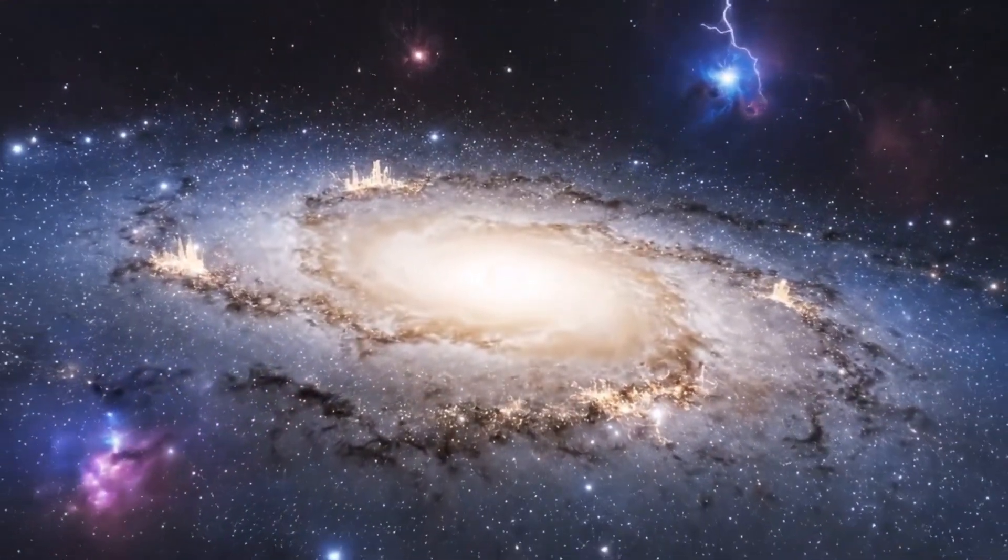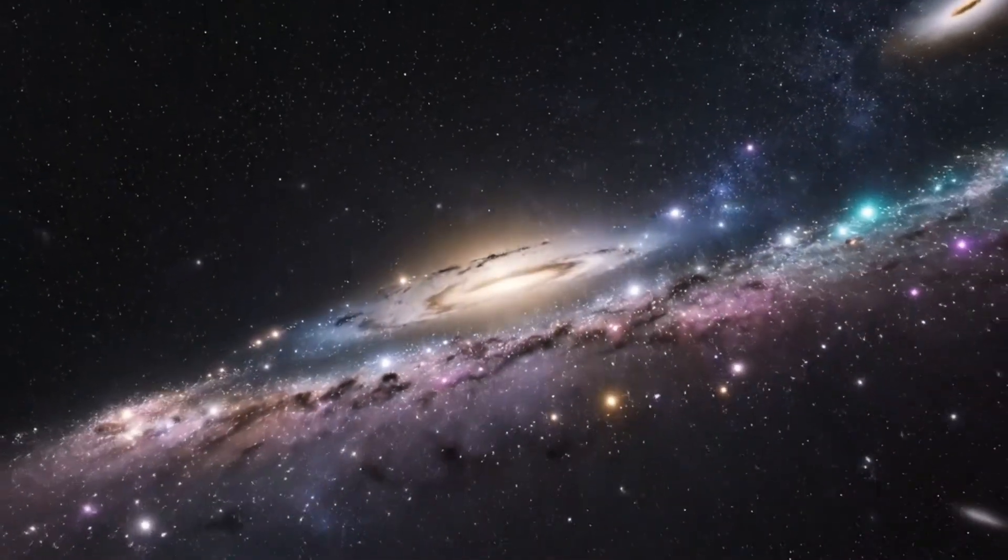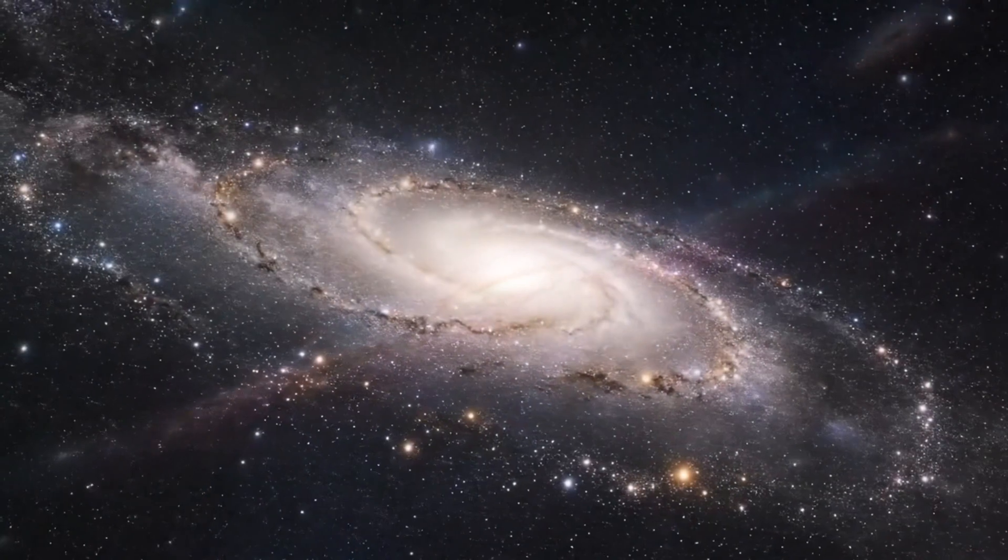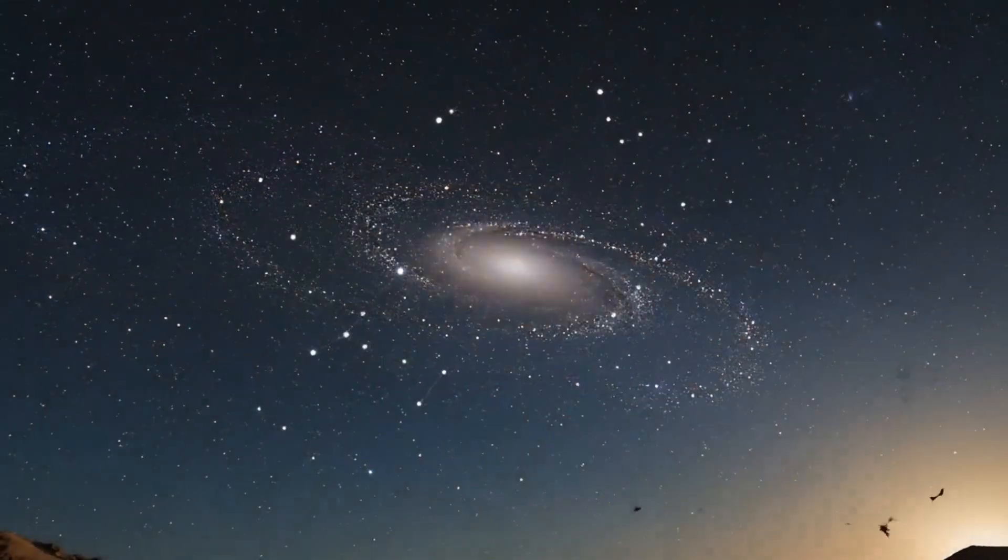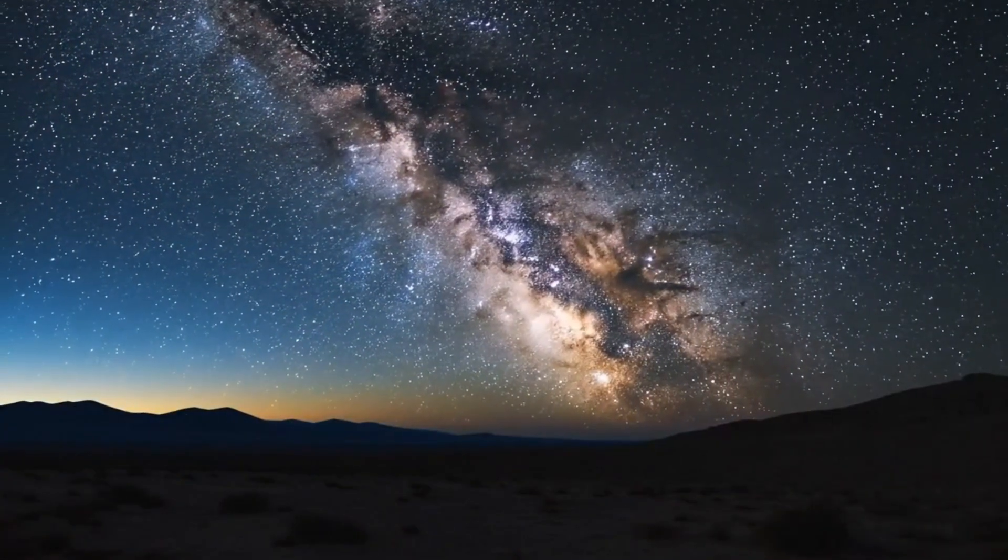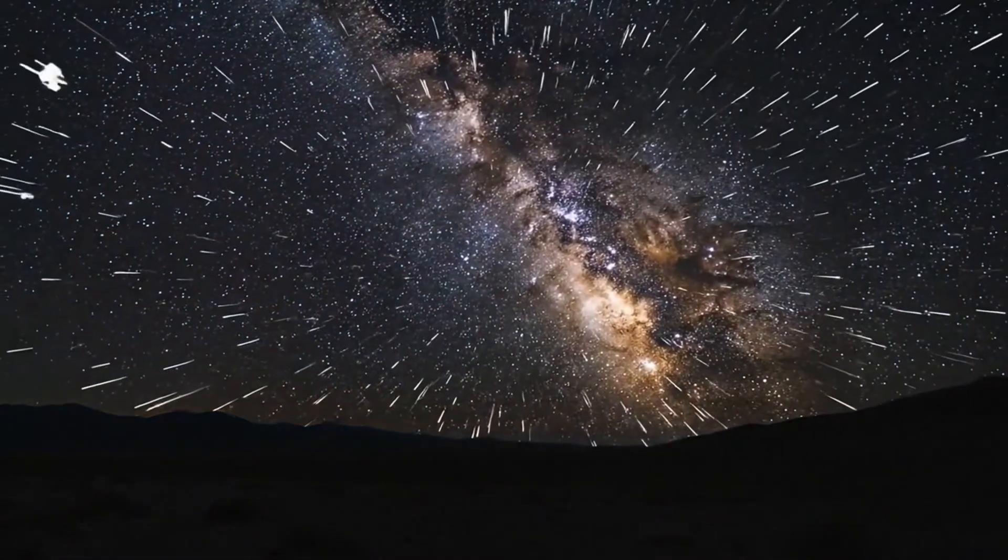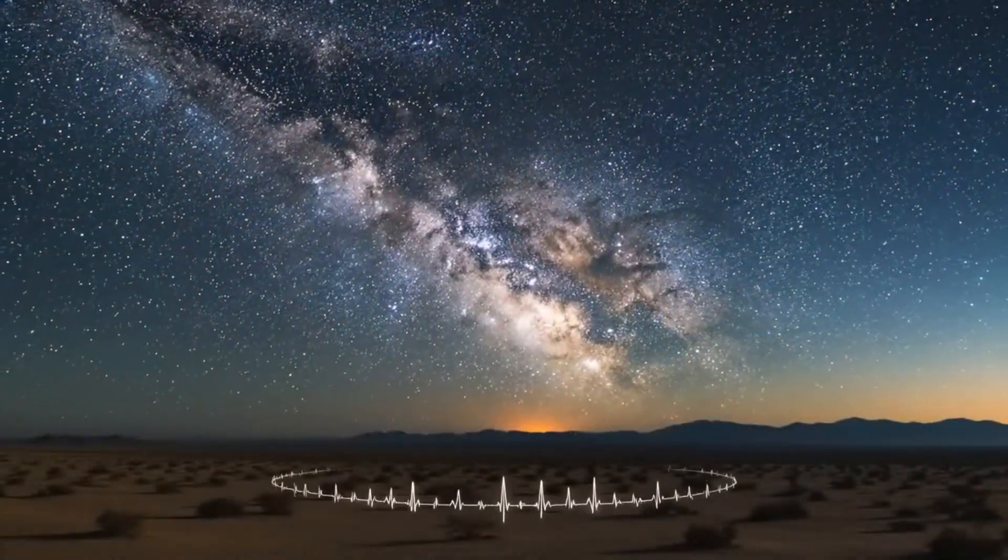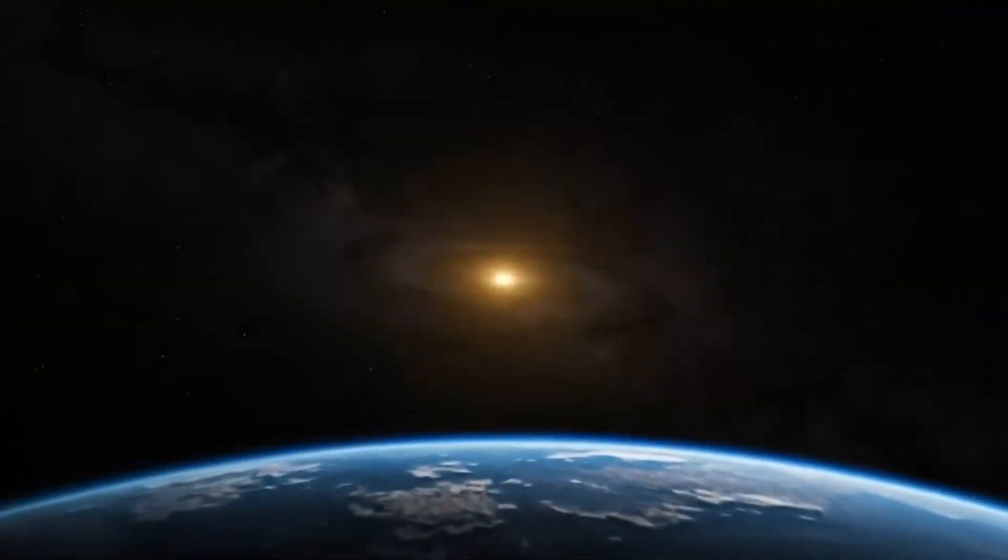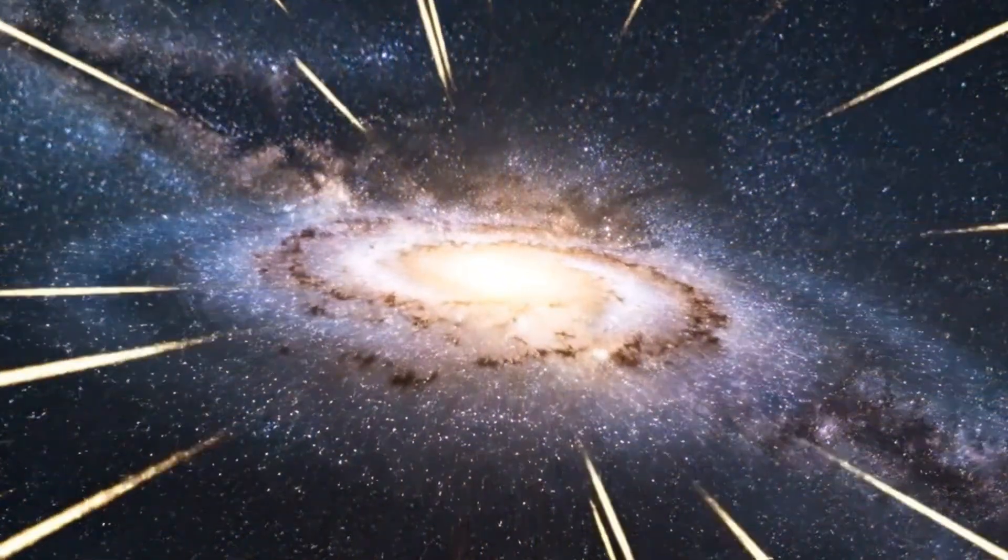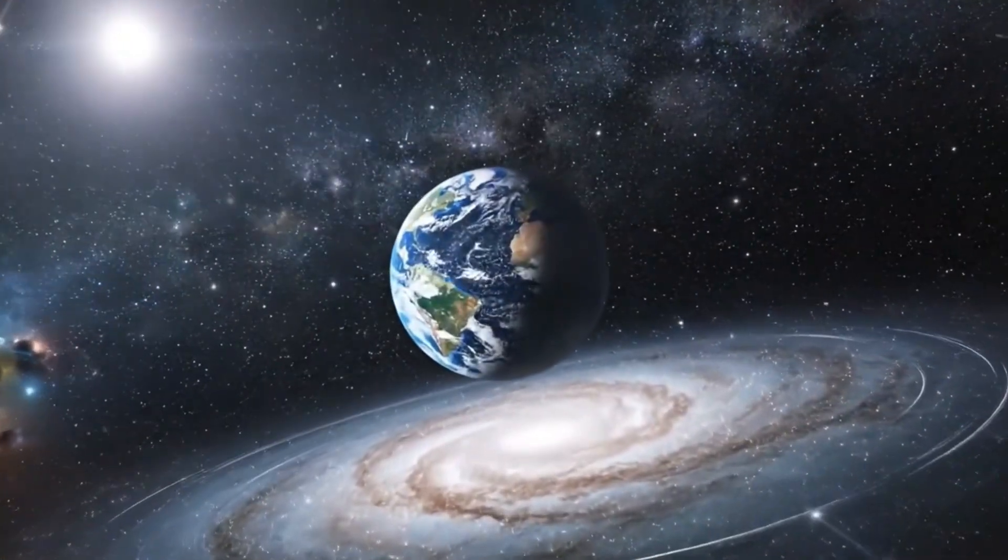The Milky Way is a cosmic city of stars. A spiral 100,000 light years across, spinning through space at 2.1 million kilometers per hour. Every bright dot you see in the night sky, every wish, every constellation, belongs to this one galaxy. If you traveled at the speed of light, it would still take you 100,000 years to cross from one side to the other.